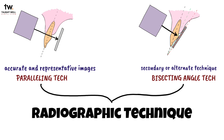The bisecting angle technique produces images with inherent distortion because the buccal and lingual aspects of the teeth and alveolar bone are not projected evenly. This distortion must be taken into consideration when interpreting the radiographs for caries and alveolar bone loss.